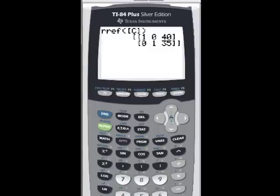And there's our solution. We've got a reduced row echelon form, so 1 times x equals 40, so x equals 40, and 1 times y equals 35.